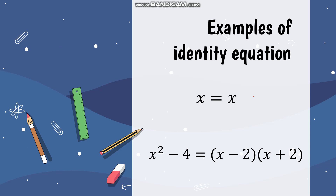Examples of identity equations: first, x equals x — any value of x will give equal values on both sides. Another example is x squared minus four equals x minus two times x plus two. This is also an identity equation because whatever value you use for x, both sides will always be equal. Notice that the right side is just the factored form of x squared minus four, so these expressions are already the same.